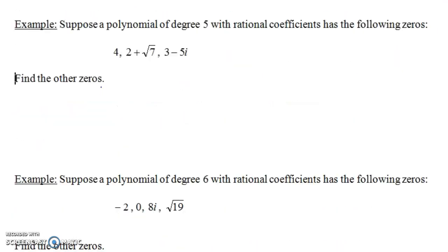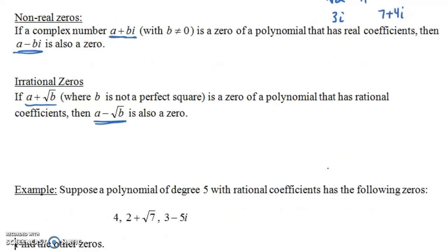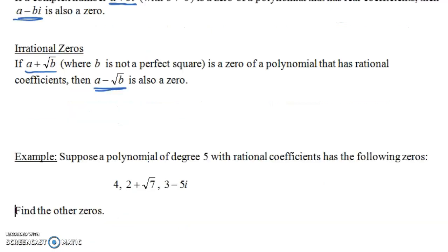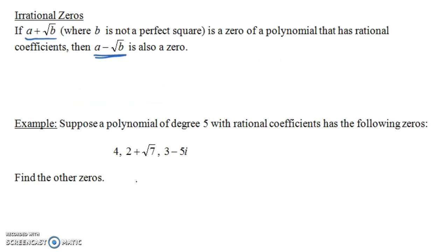Let's look at some examples. Suppose a polynomial of degree 5 with rational coefficients has the following zeros — find the other zeros. The zeros are 4, 2+√7, and 3−5i. If 2+√7 is a zero, then 2−√7 would also have to be a zero by the second part of the theorem. And if 3−5i is a zero, then 3+5i is also going to have to be a zero. So those are the other two zeros.